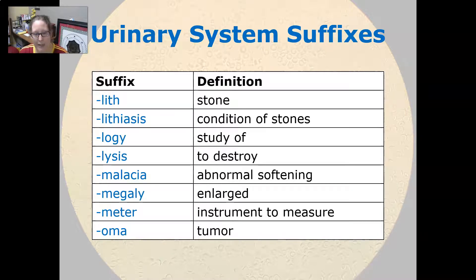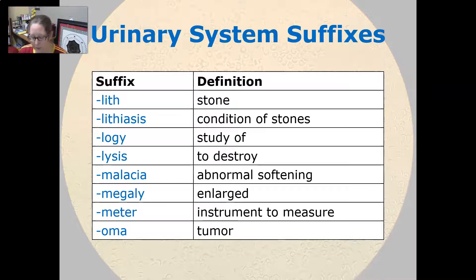Lysis is to destroy. Malacia is an abnormal softening. Megaly is enlarged. Meter is an instrument to measure. Oma is tumor.